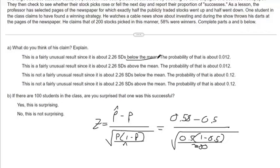And then part B: if there are 100 students in this class, are you surprised that one was this successful? This one seems like a judgment call. But what we'd say is, in probability, well, if there's 100 students...